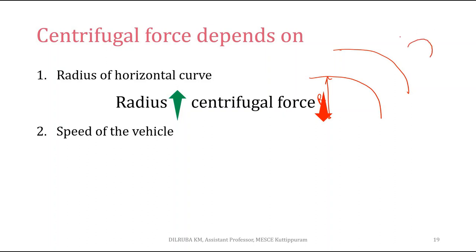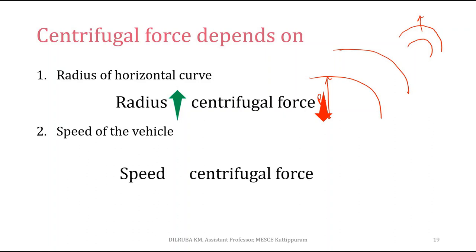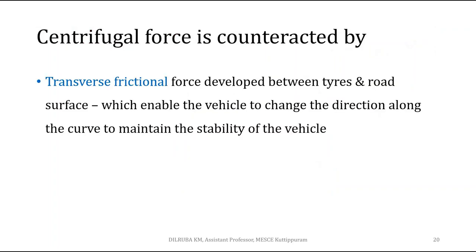If the curve is sharp — that is, if the radius is smaller — the centrifugal force will be very high. You may have noticed this when taking a sharp turn: more force tries to pull you outward. When the radius increases, centrifugal force reduces. Regarding speed, when speed increases the centrifugal force also increases. So speed is directly proportional, and radius is inversely proportional to centrifugal force.